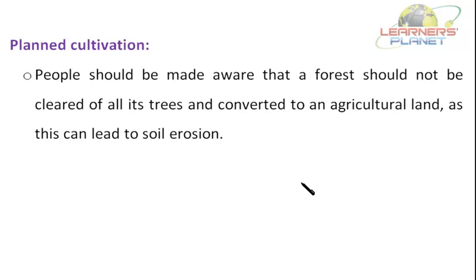There should be plant cultivation too. In plant cultivation, people should be made aware that a forest should not be cleared of all its trees and converted to an agricultural land, as this can also lead to soil erosion. We need to make farmers aware of this, and the cultivation should be planned.